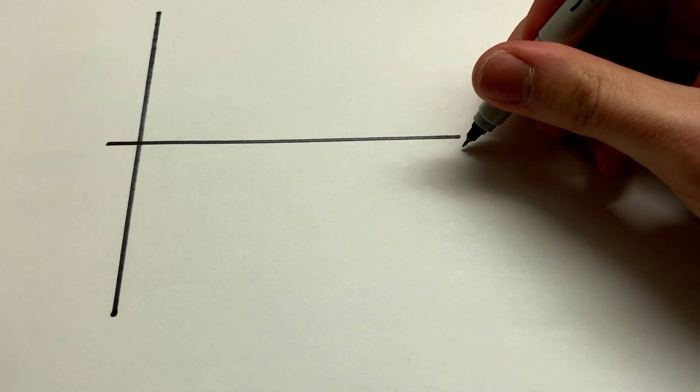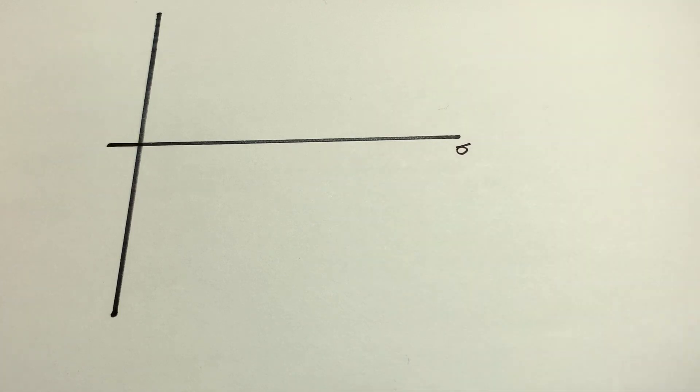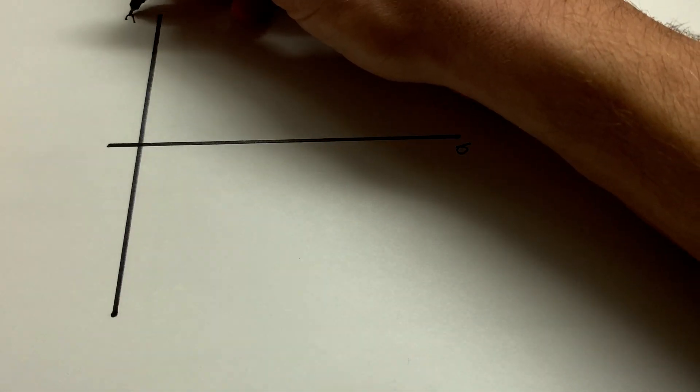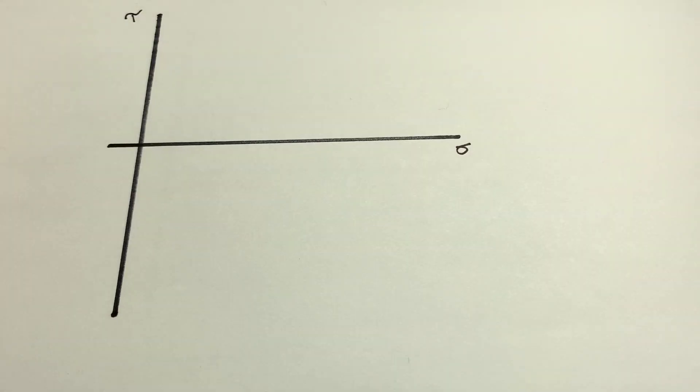That means the horizontal axis is going to be our sigma, our normal stress. The vertical axis is going to be tau, our shear stress.